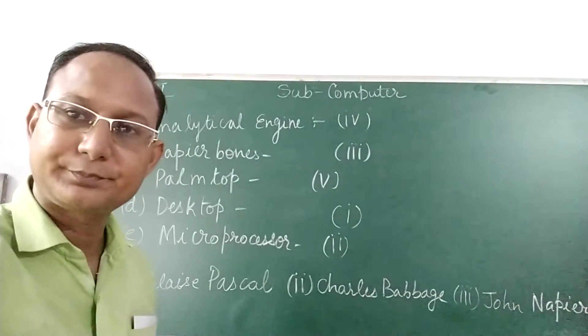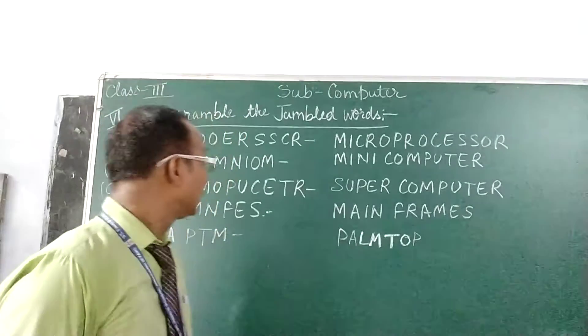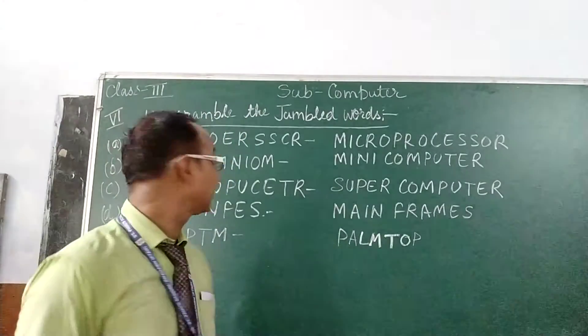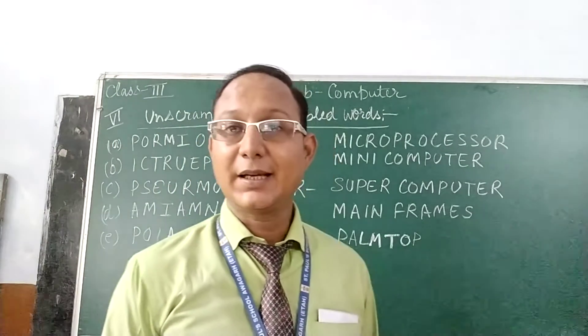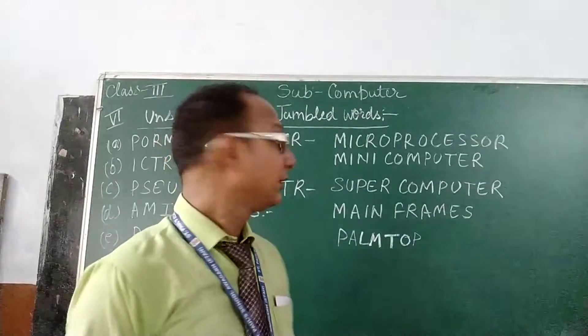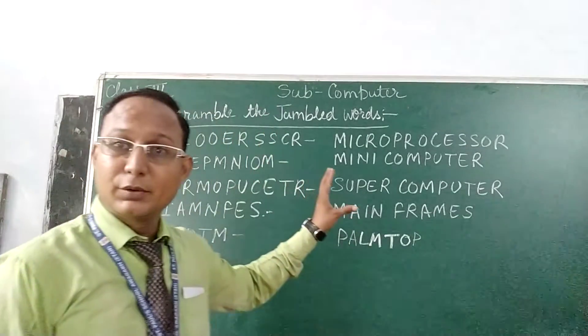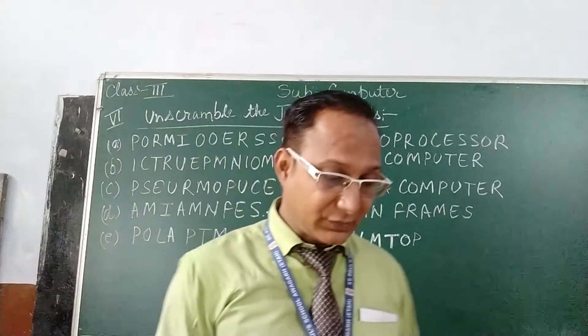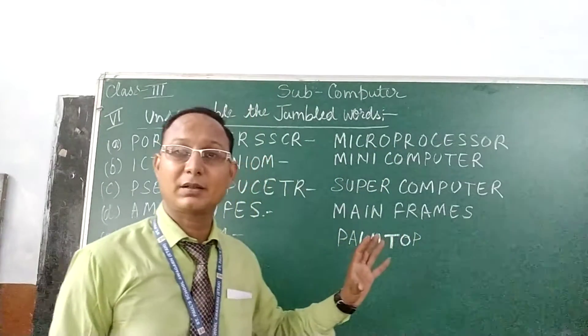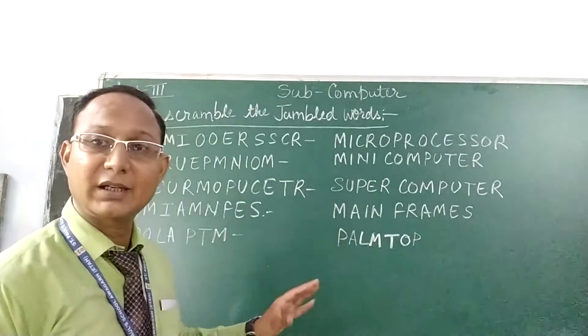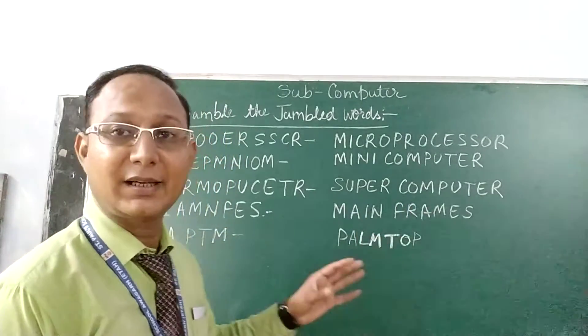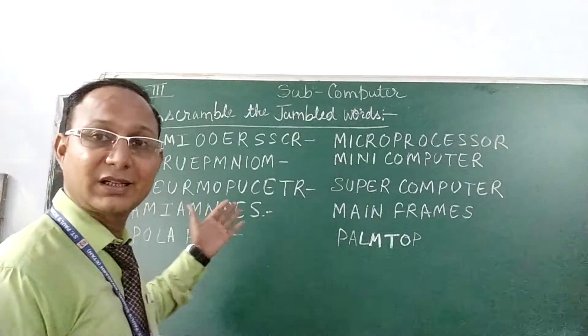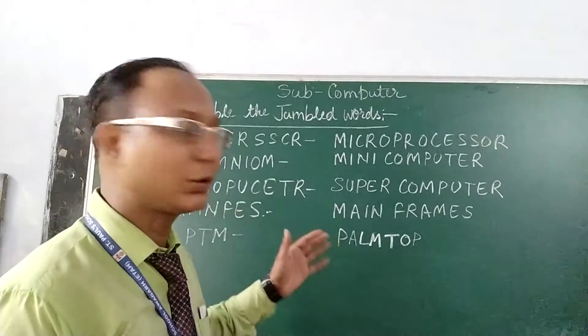Ok students. Now, our next exercise to be done in our book is Jumbled word. We have given some Jumbled words. We have to unscramble the Jumbled word. We already have done this type of exercise in our previous classes. This exercise is your next exercise given in the book. So look into your book.